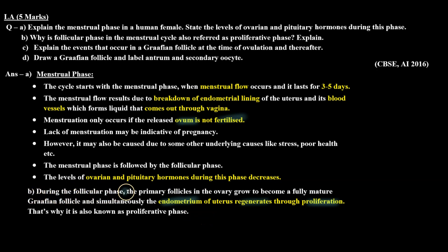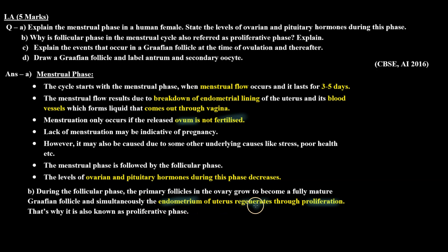B part: During the follicular phase, the primary follicles in the ovary grow to become a fully mature Graafian follicle, and simultaneously the endometrium of the uterus regenerates through proliferation. That's why it is also known as the proliferative phase.